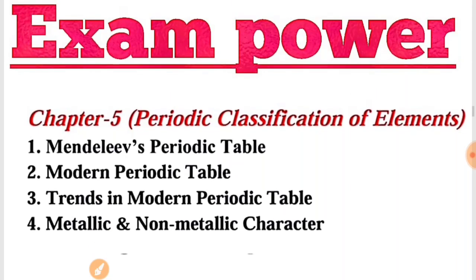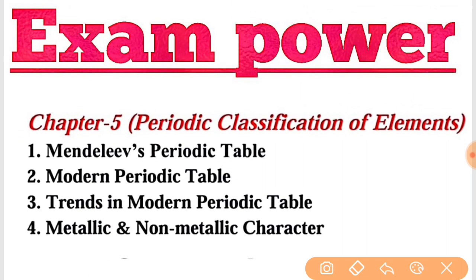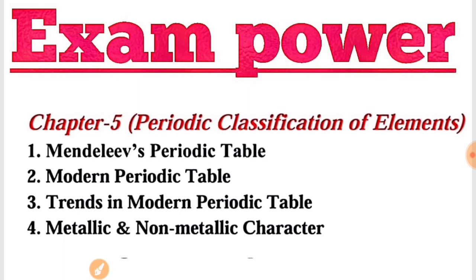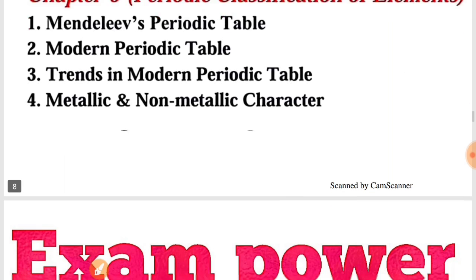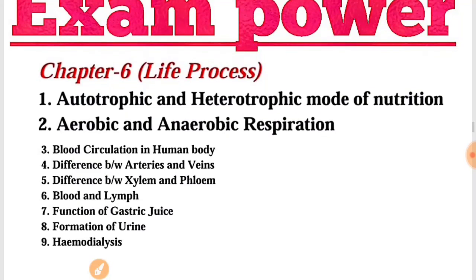Chapter Number 5 में आप से पूछा जा सकता है — Mendeleev's Periodic Table, जो एक table थी, वो पूछी जा सकती है, या Modern Periodic Table पूछी जा सकती है। इनमें से एक-दो के मान पूछे जाएं या पूरी table याद करनी पड़े। Trends in Modern Periodic Table और Metallic and Non-Metallic Character — इनमें से भी question पूछा जा सकता है।